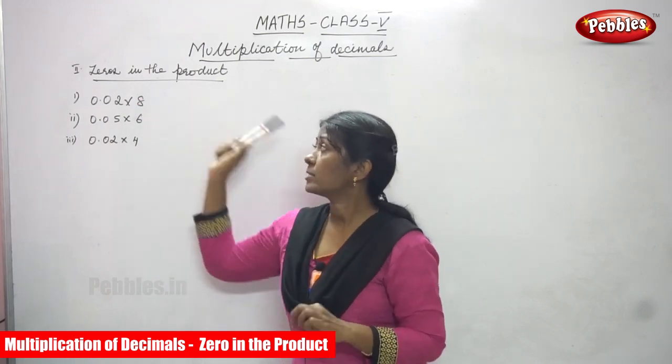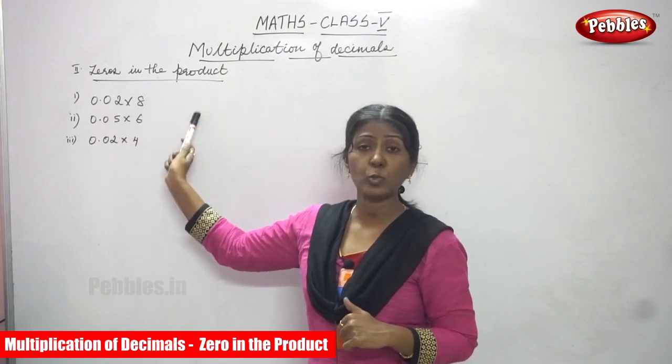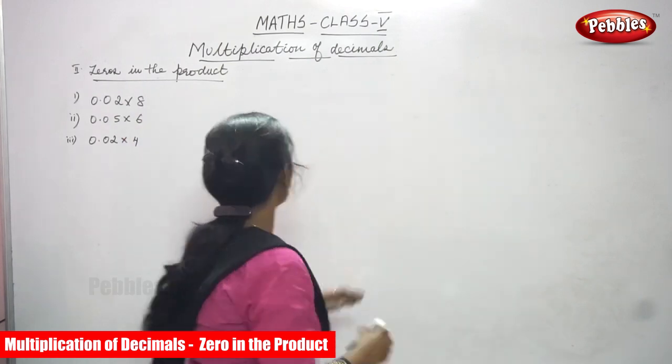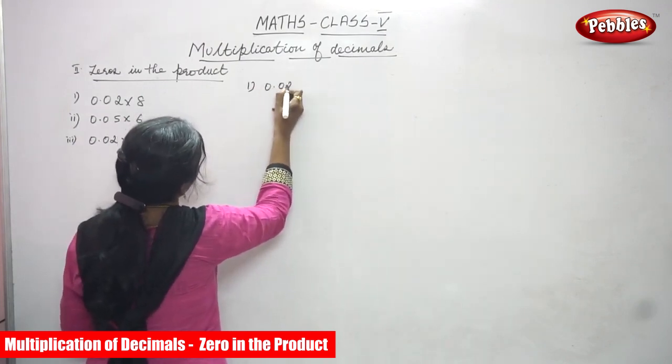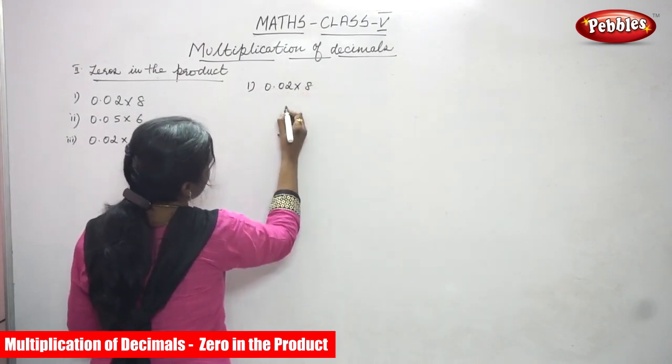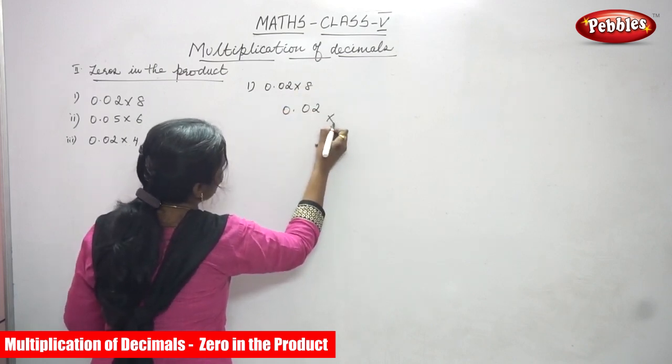Now we are going to see zeros in the product. So look at this question: 0.02 into 8. First sum, we are going to do the first sum. 0.02 into 8.